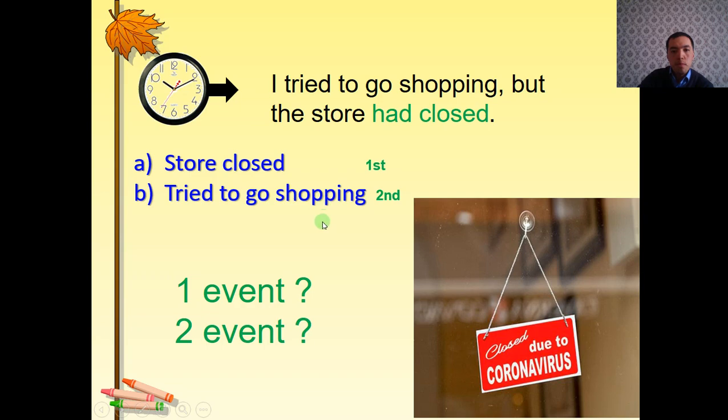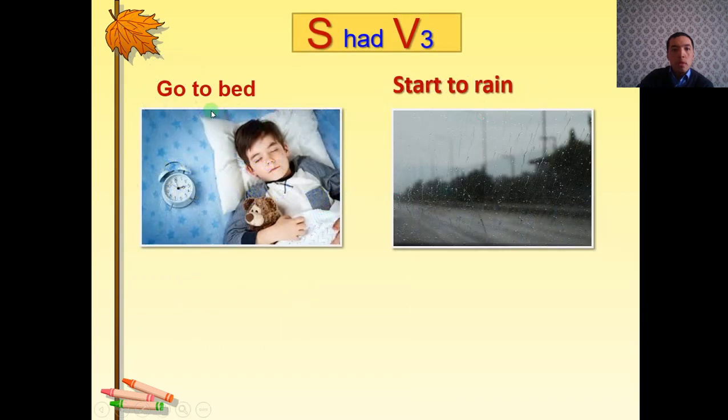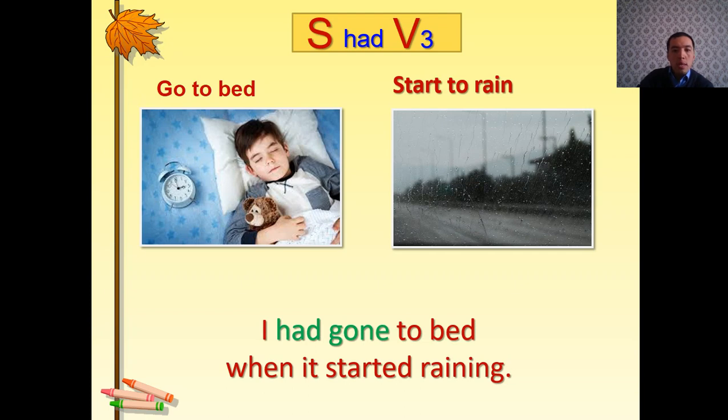Next is, here we have prompts: go to bed and start to rain. You have to make one past perfect sentence for this exercise. You have ten seconds. Okay, I had gone to bed when it started raining. I had gone to bed is first event, past perfect, and the second is when it started raining.